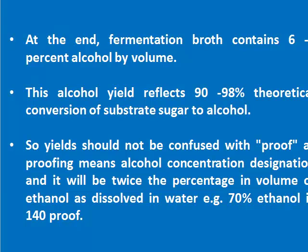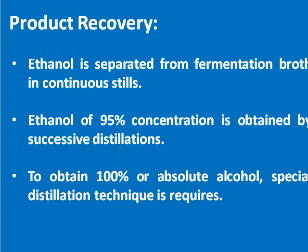Yields should not be confused with proof, as proofing means alcohol concentration designation and it will be twice the percentage by volume of ethanol dissolved in water. For example, 70% ethanol is 140 proof.